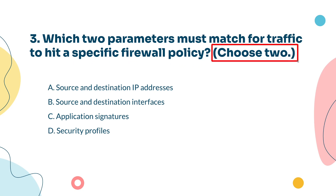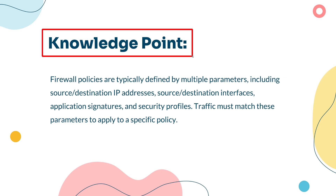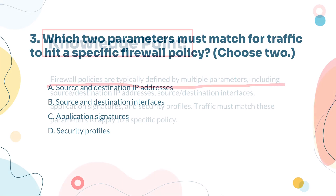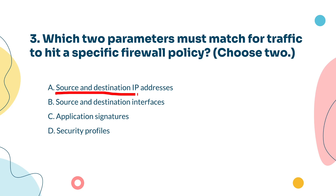Question 3 tests firewall policy matching. For a firewall policy to apply, the traffic has to match certain criteria. In this case, the source and destination IP addresses, as well as the source and destination interfaces, need to line up with what's defined in the policy. If they do, the policy kicks in. The source and destination IP addresses of the traffic are key criteria for matching a firewall policy — therefore, Option A is correct. Another crucial matching criterion is the source and destination interfaces of the traffic — therefore, Option B is also correct.